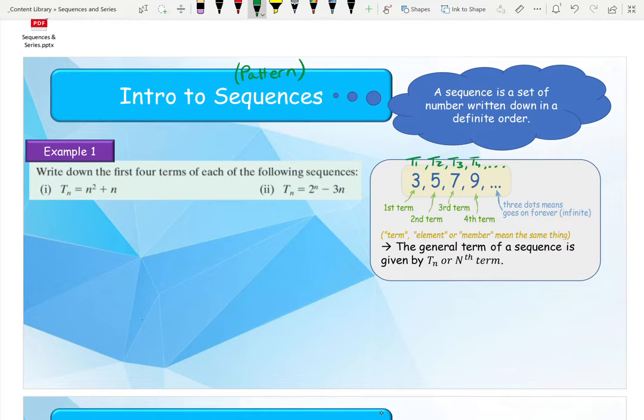Now the important thing to remember and what you're going to see a lot in questions is talking about the general term of a sequence which can also be given by TN or the nth term. And we're going to be looking at formulas for these in a little while which will be on our log tables on page 22.